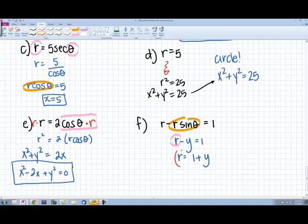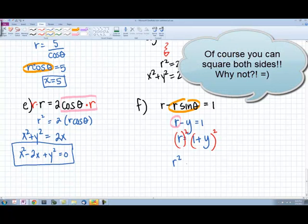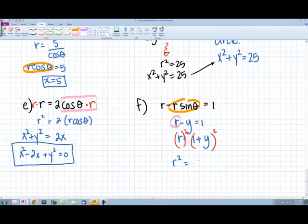Then we're going to square everything. It's okay to square both sides. What's going to happen is we create our r squared, which is good because we have a conversion equation for that, and the right side stays rectangular. I'm going to go ahead and foil that right side out to be 1 plus 2y plus y squared.